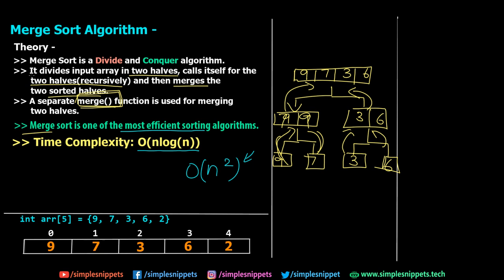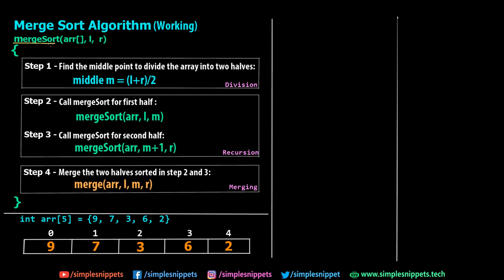Now let's cover the four major steps and three phases of Merge Sort. The Merge Sort function is written with parameters: the array, L (leftmost index), and R (rightmost index). Inside it, we have Step 1, Step 2, Step 3, and Step 4. Steps 2 and 3 are the recursion phase. Overall, we have three phases: the division phase, the recursion phase, and finally, merging it back together.